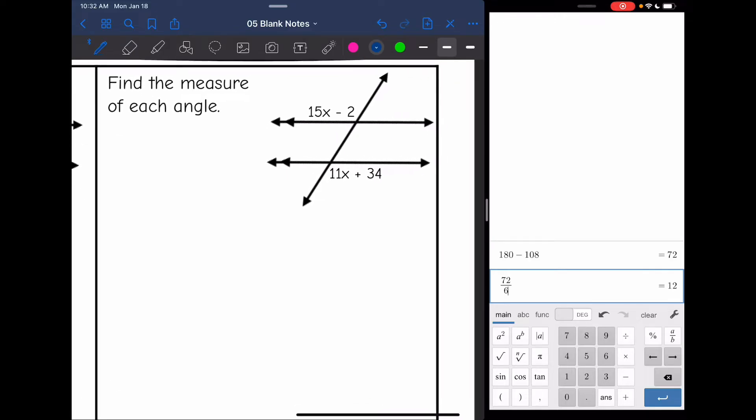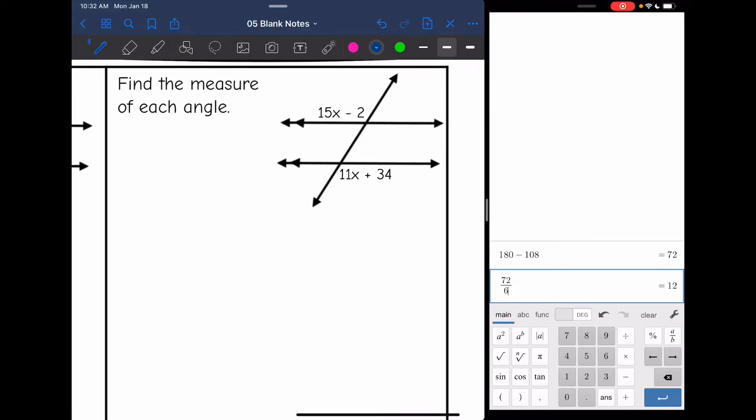Next one it says find the measure of each angle. So I'm going to have to find x and then substitute it back in. So these angles are alternate exterior because they're outside the parallel lines and they're on opposite sides of the transversal. I can also tell that both of them are obtuse angles, so these angles are congruent. I can set them equal to each other since they're the same. So that's the equation I'm going to set up. 15x minus 2 equals 11x plus 34 to find x.